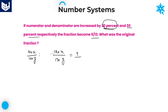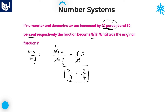The fraction becomes 9 by 13. What is the original fraction? Here you can cancel the zeros, and 13 cancels. This is 3 times and this is 4 times. Now, x by y is equal to 3 by 4. That is the original fraction. 100x by 100y is nothing but x by y only — both are cancelled. Therefore, x by y is equal to 3 by 4. That is the original fraction.